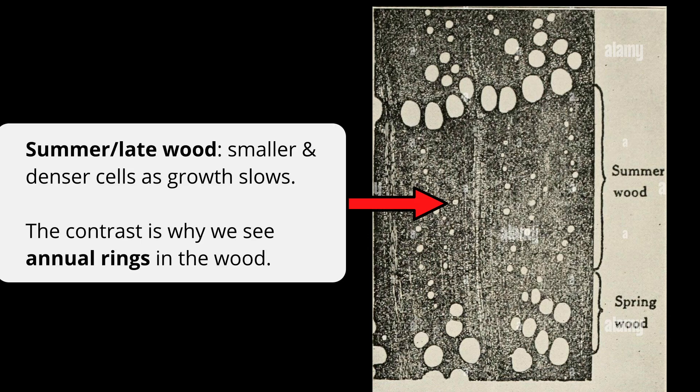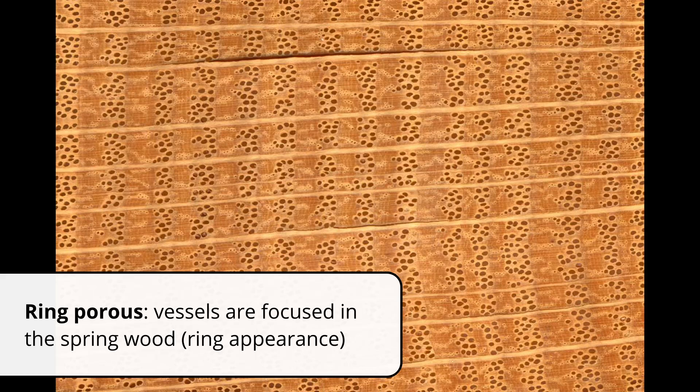Towards the end of the season, growth slows, the cells get smaller and tighter — that's the late wood. It's the contrast between the early wood and the late wood that gives you the appearance of annual rings. If the vessels are in the spring wood, the species is said to be ring porous.